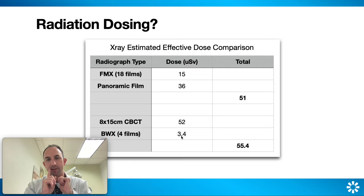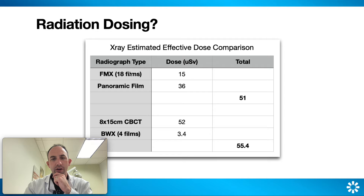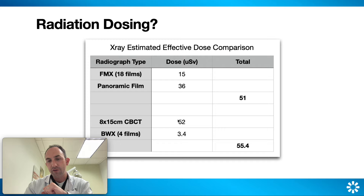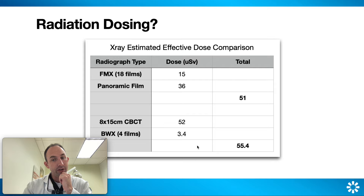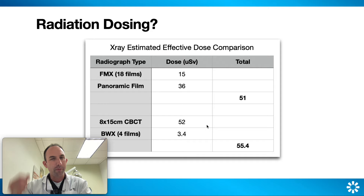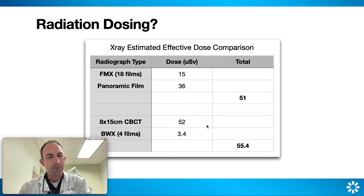For me, I normally order four bitewings and a couple of anterior PAs — I want to see all the interproximal contact. So this is very comparable: 51 microsieverts for an old-school pano and 18 films, or 55 for a set of bitewings and a standard resolution CBCT, which gives you 600 different slices to look through. That's a lot more data for a nominal increase in radiation. I use the high resolution setting, which gives about 40% more radiation — so you're in the 70 to 80 microsievert range depending on dosage.